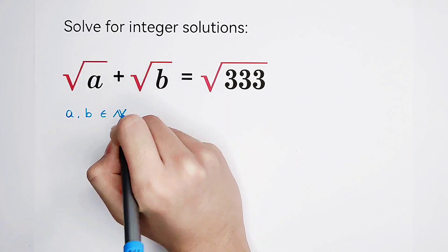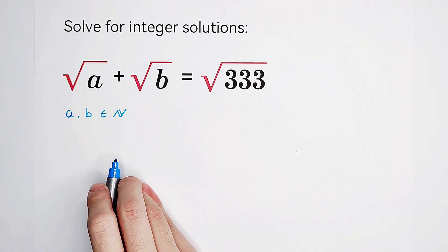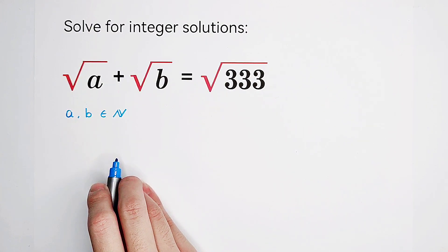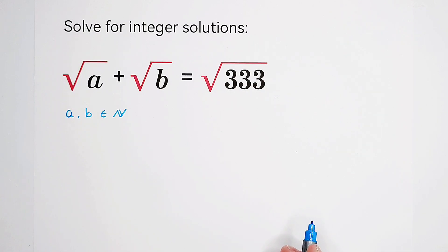Why are they natural numbers? Because they are integers and they are non-negative. Every non-negative integer is a natural number. So a and b are natural numbers.